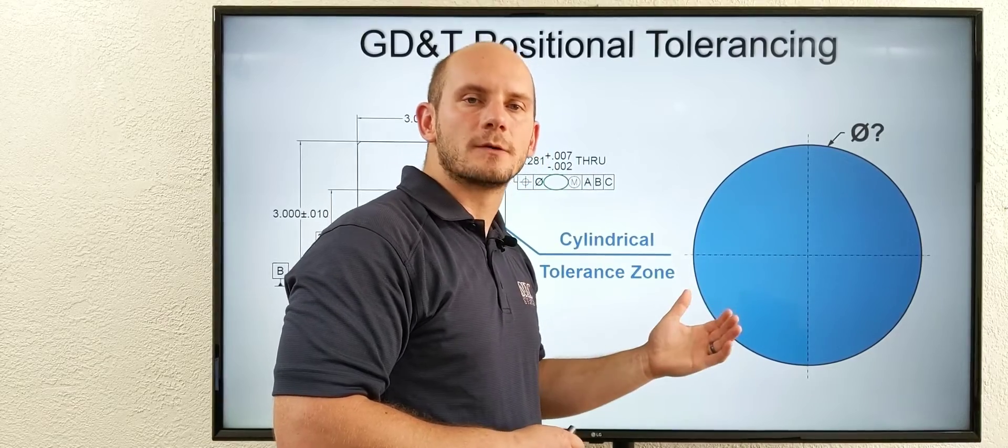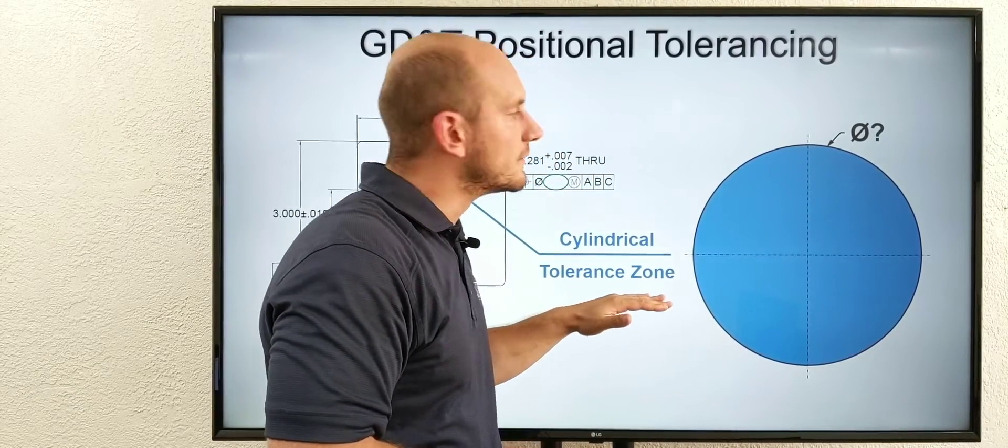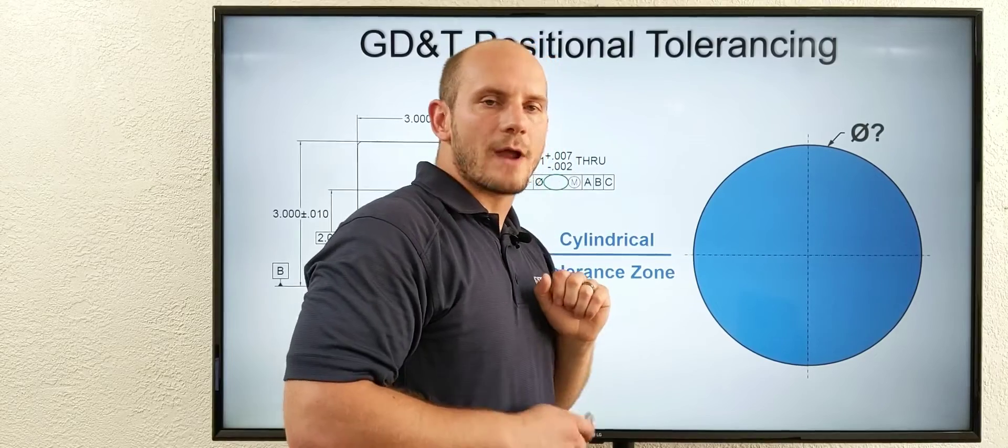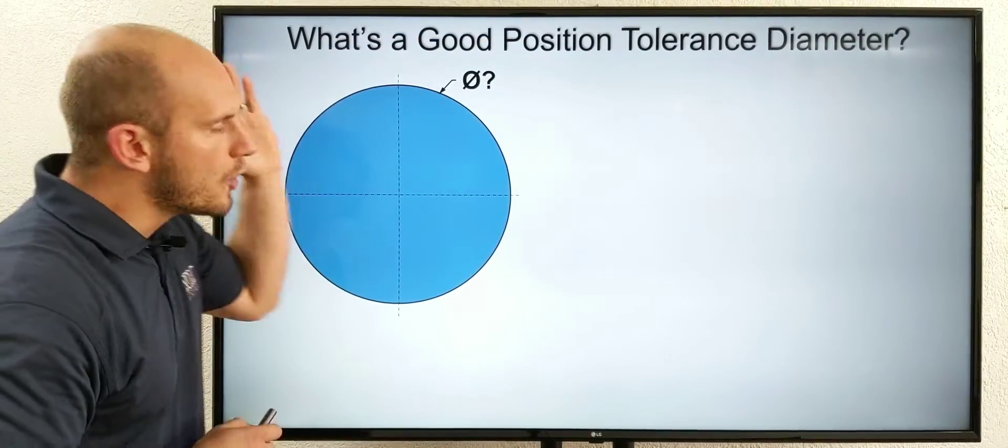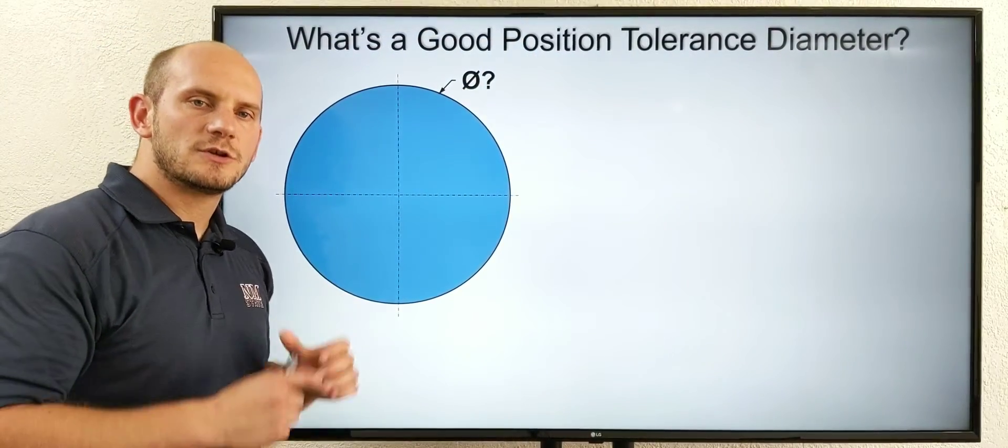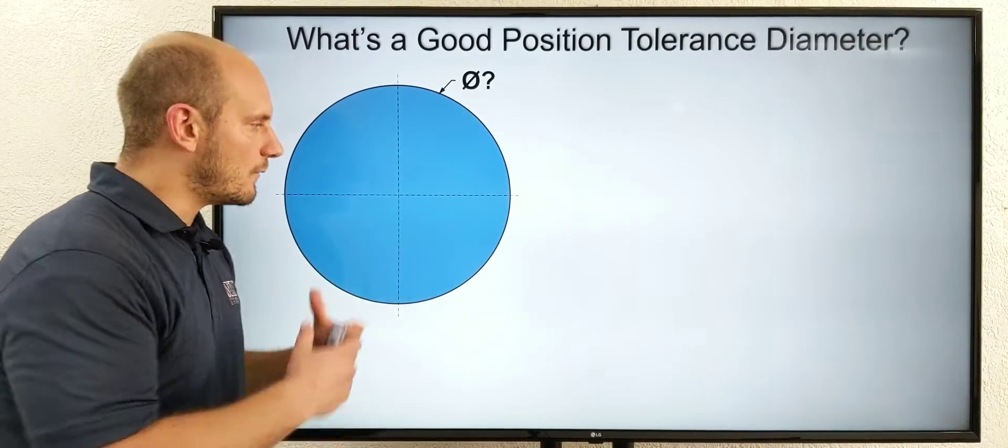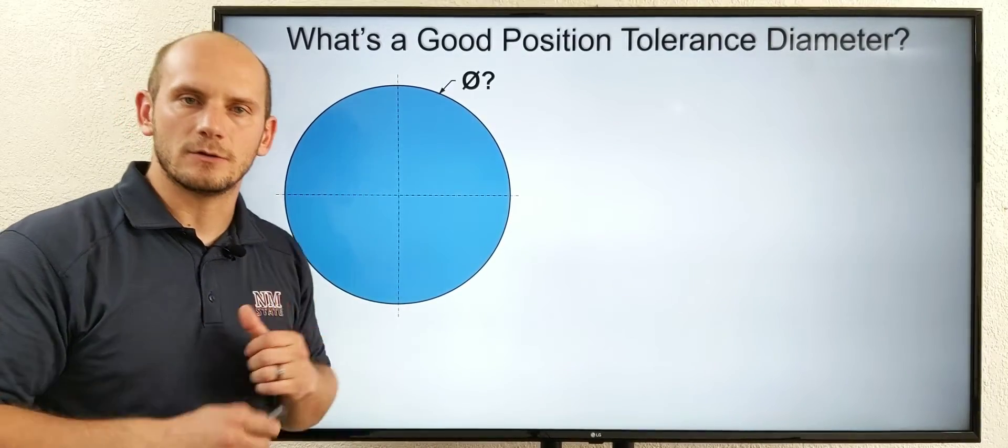It's a cylindrical tolerance zone. Because it's cylindrical, it has a diameter, and that's what we're after today. We want to know what's a good GD&T position tolerance diameter that we can use in our designs if we're new to GD&T.